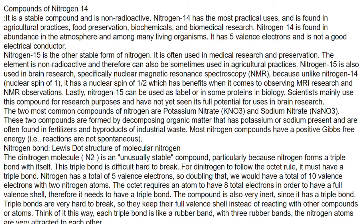The two most common compounds of nitrogen are potassium nitrate and sodium nitrate. These two compounds are formed by decomposing organic matter that has potassium or sodium present, and are often used in fertilizers. Most nitrogen compounds have positive Gibbs free energy. The dinitrogen molecule N₂ is an unusually stable compound because nitrogen forms a triple bond with itself. This triple bond is difficult to break. For dinitrogen to follow the octet rule, it must have a triple bond and five valence electrons; the octet requires an atom to have eight total electrons to fill the valence shell.